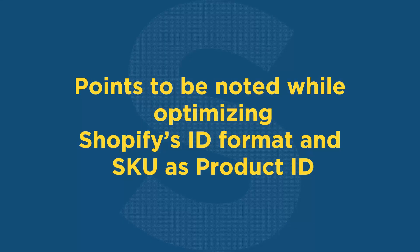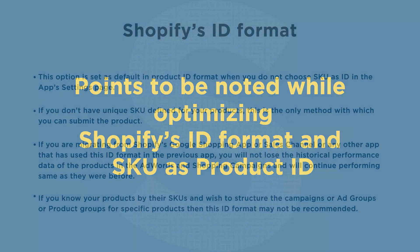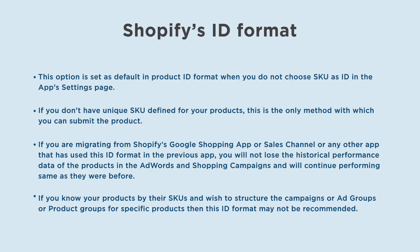Now we will see some points to be noted while using Shopify's ID format and SKU as Product ID format. Shopify's ID format is set as default when you do not choose SKU as ID in the app's settings page. If you don't have a unique SKU defined for each product, this is the only method with which you can submit the product. If you are migrating from Shopify's Google Shopping app, Sales Channel, or any other app that used this ID format previously, you will not lose the historical performance data of your products in AdWords and Shopping campaigns.